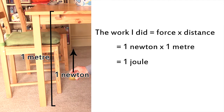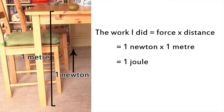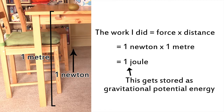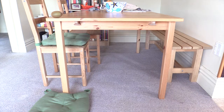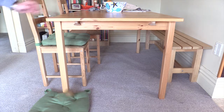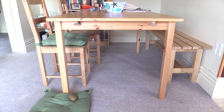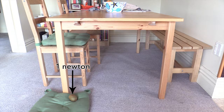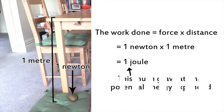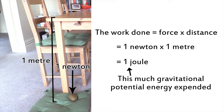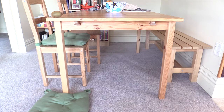Let's go back to the kiwifruit. The energy used to lift the kiwifruit from the floor to the table doesn't disappear when the kiwifruit reaches the tabletop — it has been converted into a kind of stored energy called gravitational potential energy. If you don't believe me, let's use this stored potential energy to do some work. If I tip the kiwifruit just over the edge of the tabletop, the downward force of gravity immediately takes over, pushing the kiwifruit down to the floor. The force of gravity, equal in this case to one Newton, has pushed the kiwifruit through a distance of one metre, so again one joule of work has been done, or one joule of gravitational potential energy has been expended.